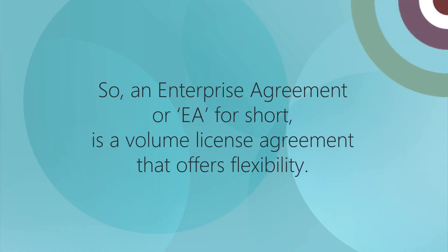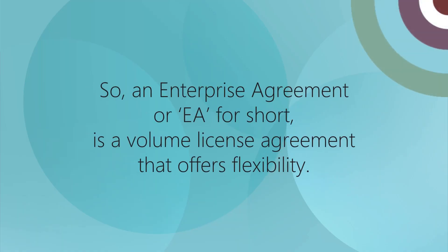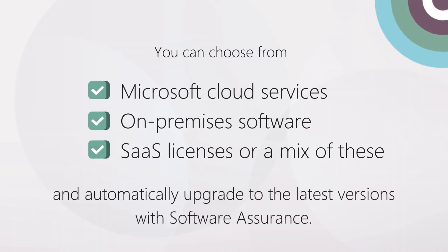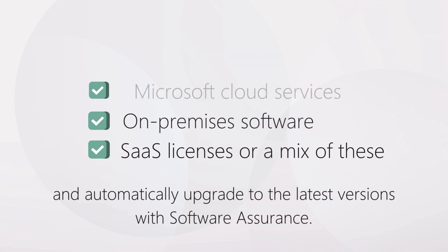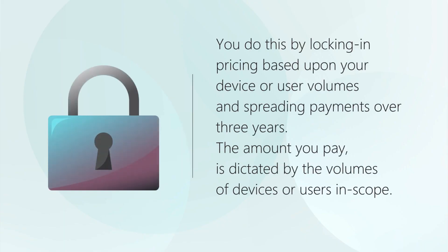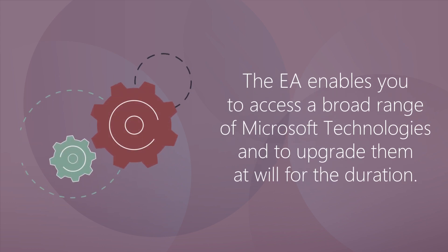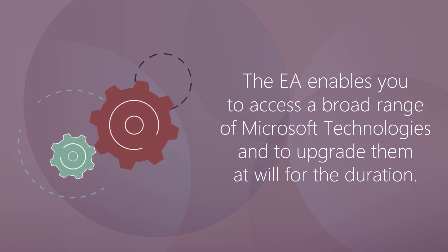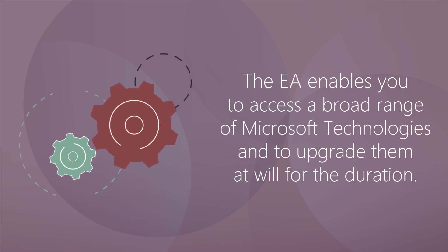So an Enterprise Agreement, or EA for short, is a volume license agreement that offers flexibility. You can choose from Microsoft's cloud services or on-premises software, SaaS licenses, or a mix of these, and automatically upgrade to the latest versions with software assurance. You do this by locking in pricing based upon your device or user volumes and spreading payments over three years. The amount you pay is dictated by the volumes of devices or users in scope, so the EA enables you to access a broad range of Microsoft technologies and to upgrade them at will for the duration.